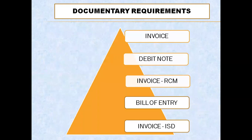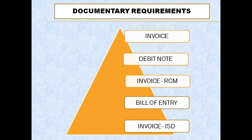The documentary requirements for a registered person to avail ITC are: first, an invoice issued by the supplier of goods or services, or a debit note issued by the supplier; an invoice issued when the tax is payable by the registered dealer under reverse charge mechanism; a bill of entry as documentary evidence in case of IGST on imports; and an invoice in case of an input service distributor.